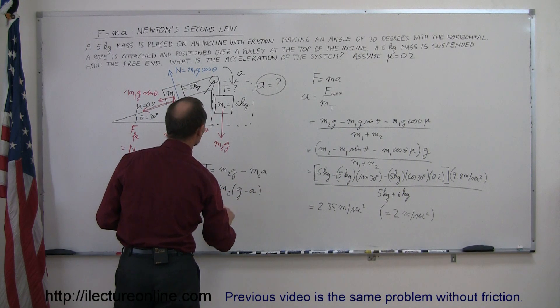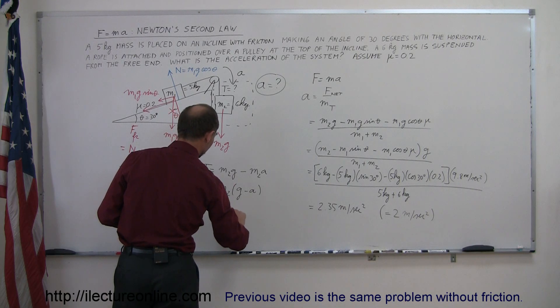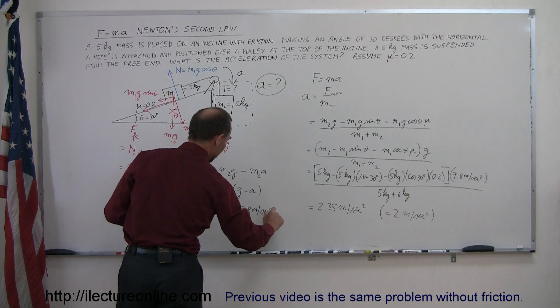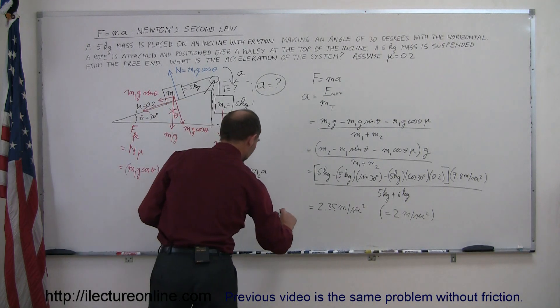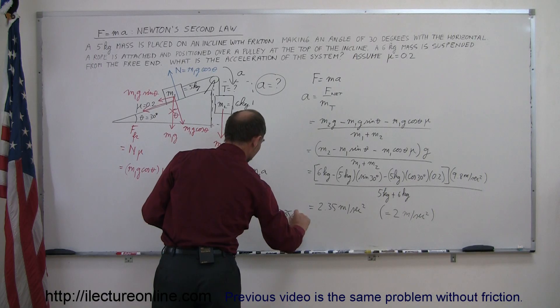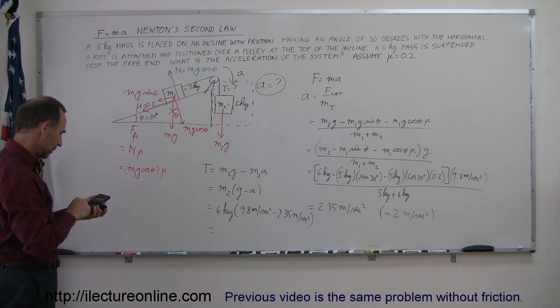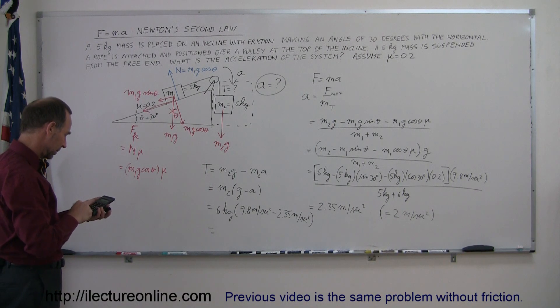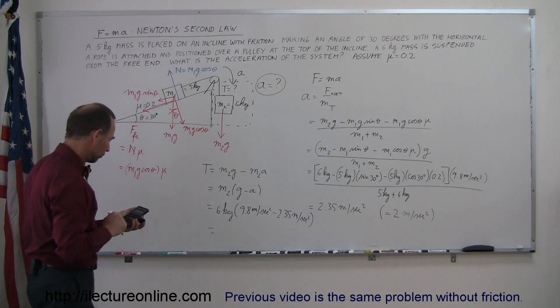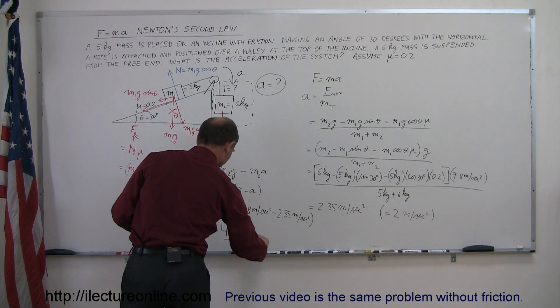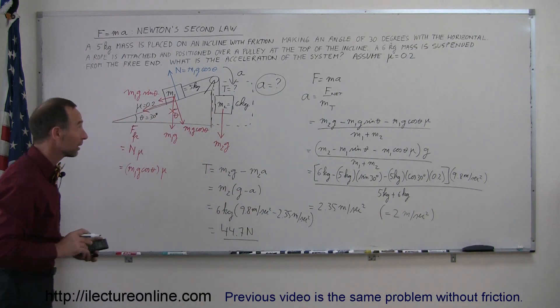So m2 is equal to, in this case, 6 kilograms times g which is 9.8 meters per second squared, minus 2.35 meters per second squared. So subtracting that from 9.8 and multiply it times 6, the tension is 44.7 newtons. There we go. So that's how we calculate the tension.